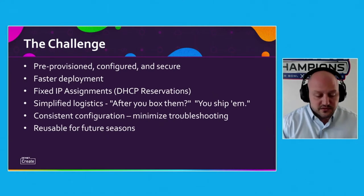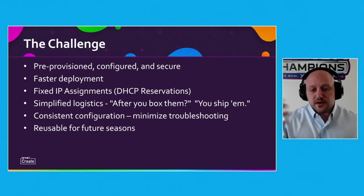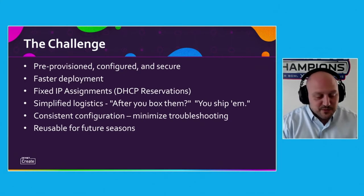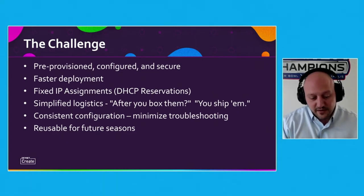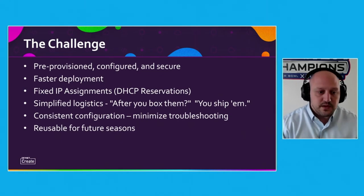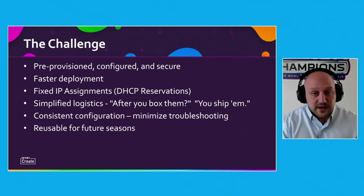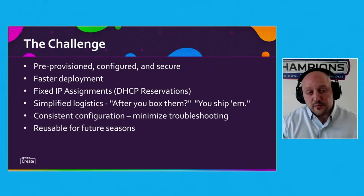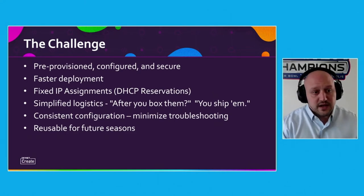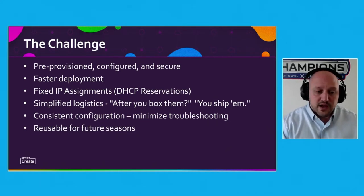They wanted to simplify the logistics — to say this box, maybe this serial number, is going to go to this site. The goal was to take a device, put it in a box, log the serial number, and send it. Minimizing troubleshooting was also really key, because there was a lot of time spent, and often the receiving location is an independent party that operates the store for that season and they're not always the most technical. So if we can get it right once and then spread that to the remainder of the sites, it would minimize troubleshooting, and anything that did come up we'd address with documentation to make it very easy for the stores themselves to bring the systems online and validate that they're working.